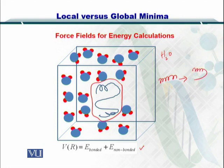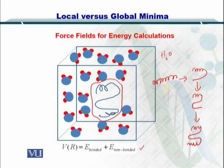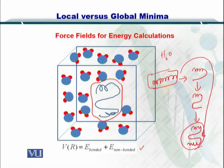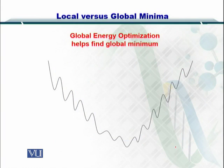Starting from an alpha helix, it took this shape, then this shape, and in the fourth iteration it took this shape. So an alpha helix, after several evolutionary steps, has attained the final structure. Here in this slide, there is a curve in which we have these valleys, and each one of these valleys represents an energy value.